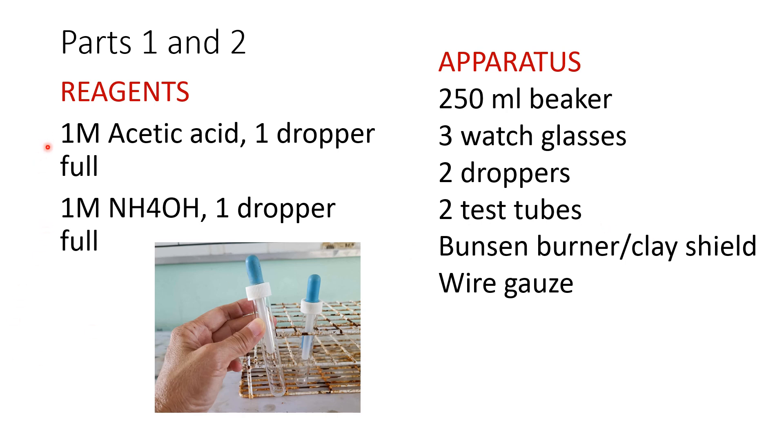For the reagents, you will need 1 molar acetic acid, 1 dropper full, and 1 molar ammonium hydroxide, 1 dropper full. So this is what I mean. You will draw 1 ml, around 1 ml, that is 1 dropper full of the ammonium hydroxide and the acetic acid. And you will sit the dropper containing the reagent in a test tube.